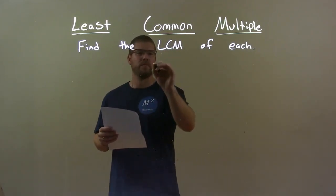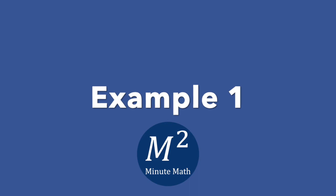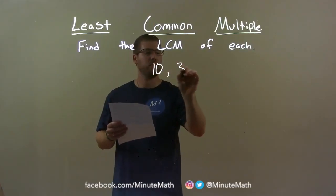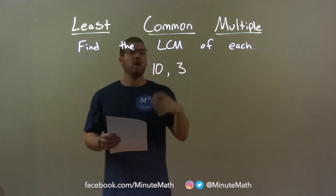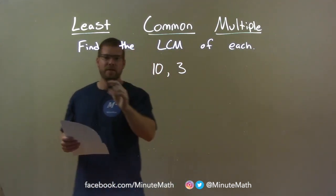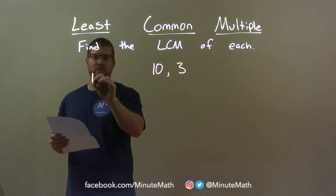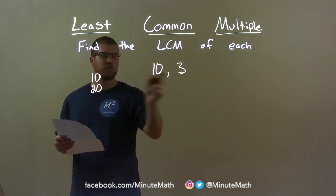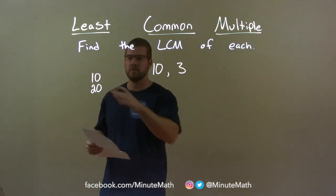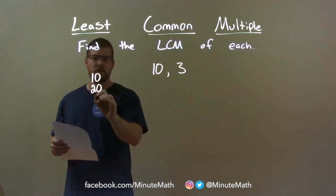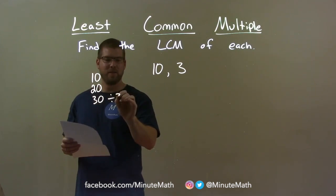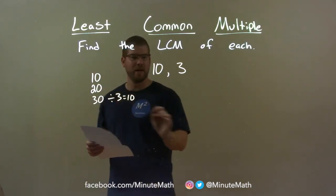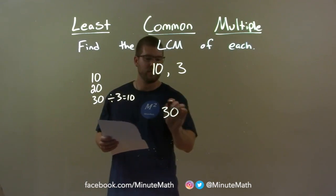If I was given these numbers, 10 and 3. What I want to do is always take the larger number and find all the multiples of that. So 10, then we have 20. Does 3 go into 10? No. Does 3 go into 20? No, not evenly. But the next one is 30. Does 3 go into 30? Yes — 30 divided by 3 is 10, so it goes in evenly. So my answer here is just 30.